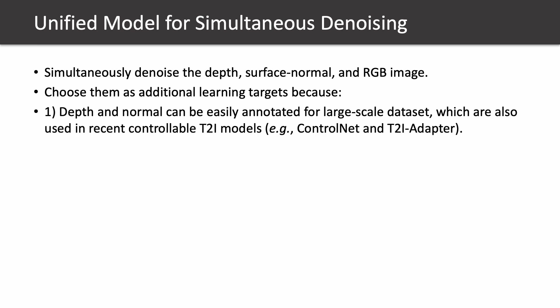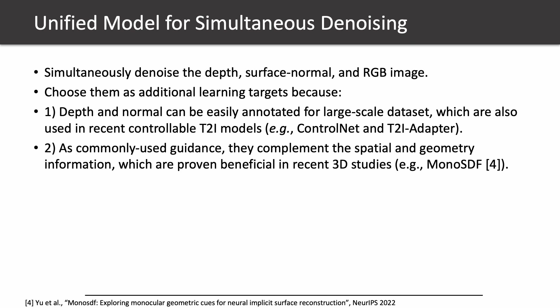To solve the first problem, we devise a unified model for simultaneous denoising. Specifically, the depth map, normal map, and RGB image are simultaneously denoised. We choose them as additional learning targets for two reasons. First, depth and normal can be easily annotated for large-scale datasets, and are also used in recent controllable T2I models like ControlNet and T2I-Adapter. Second, as commonly used guidance, they complement the spatial and geometry information, which are proven beneficial in recent 3D studies like MonoSDF.